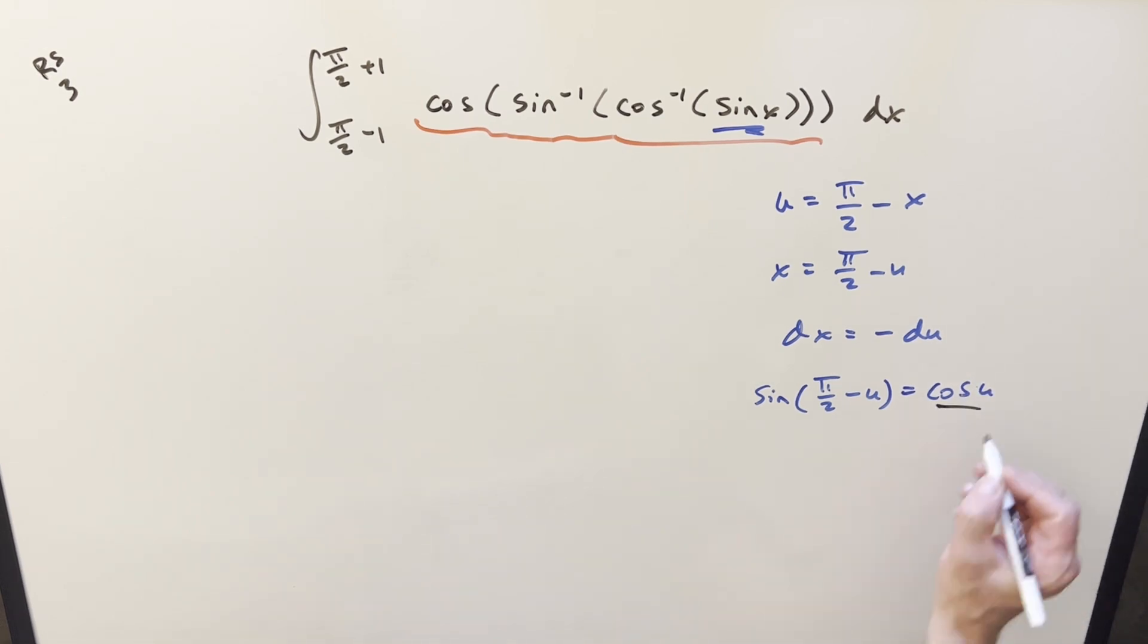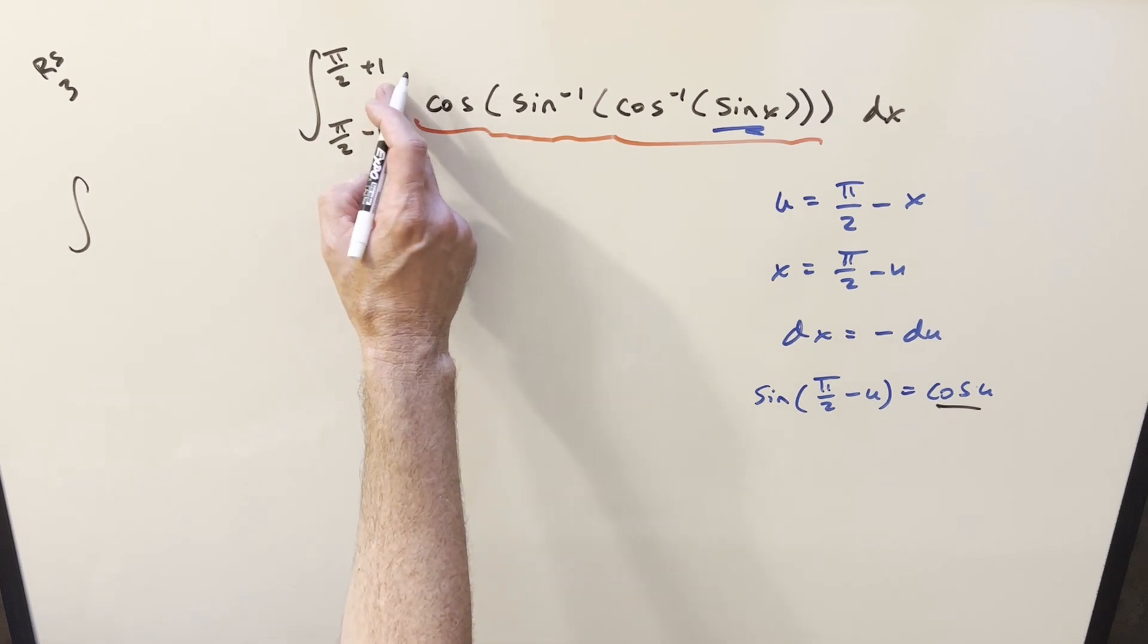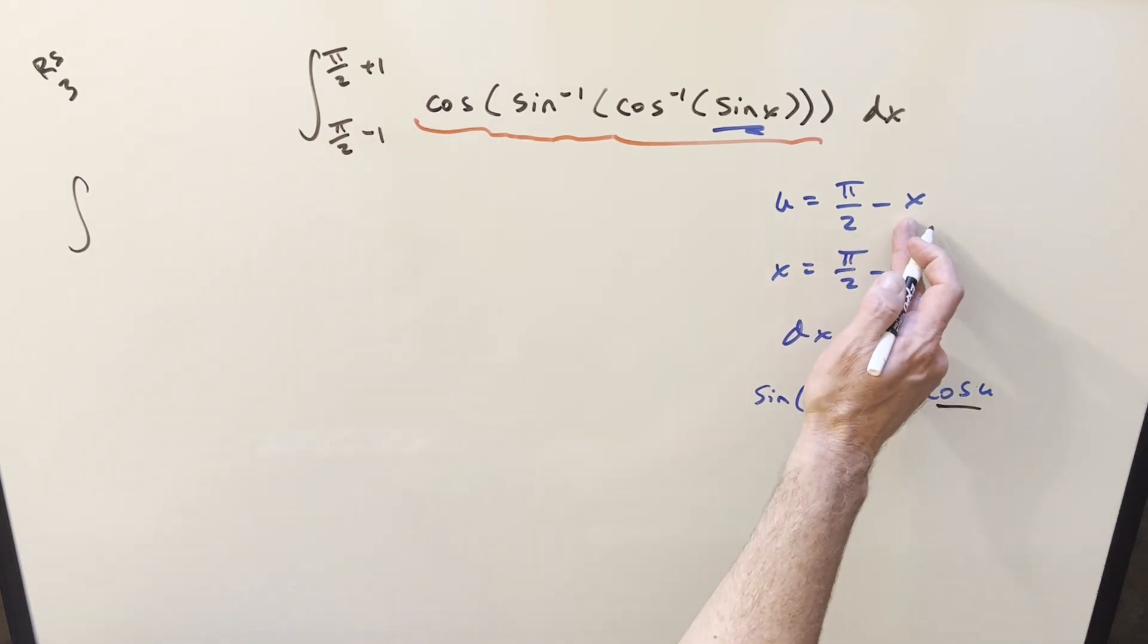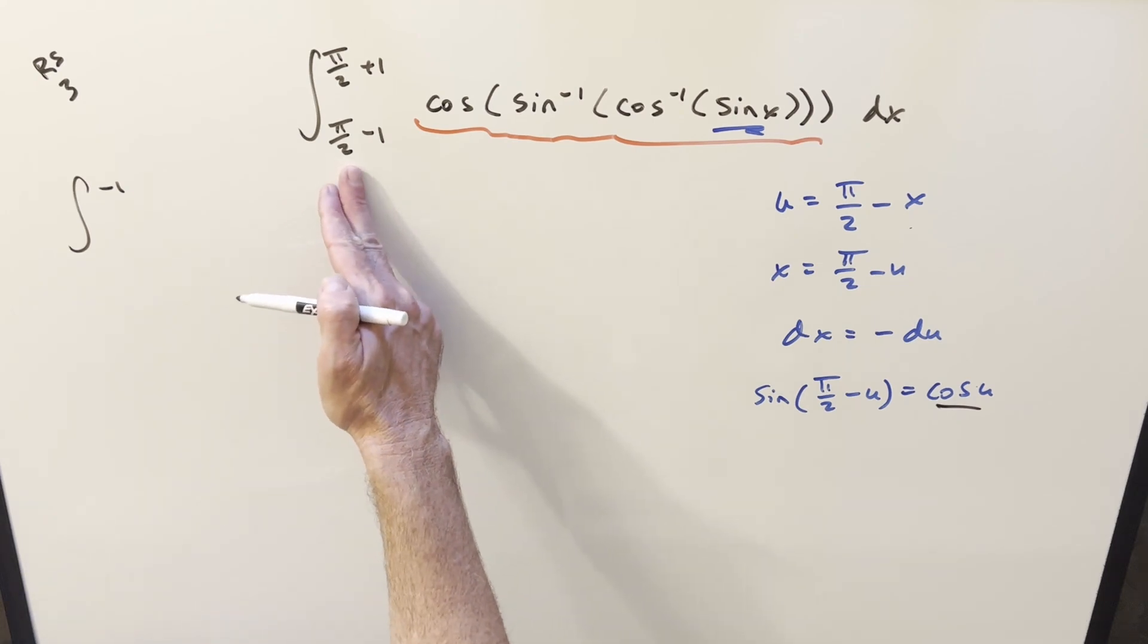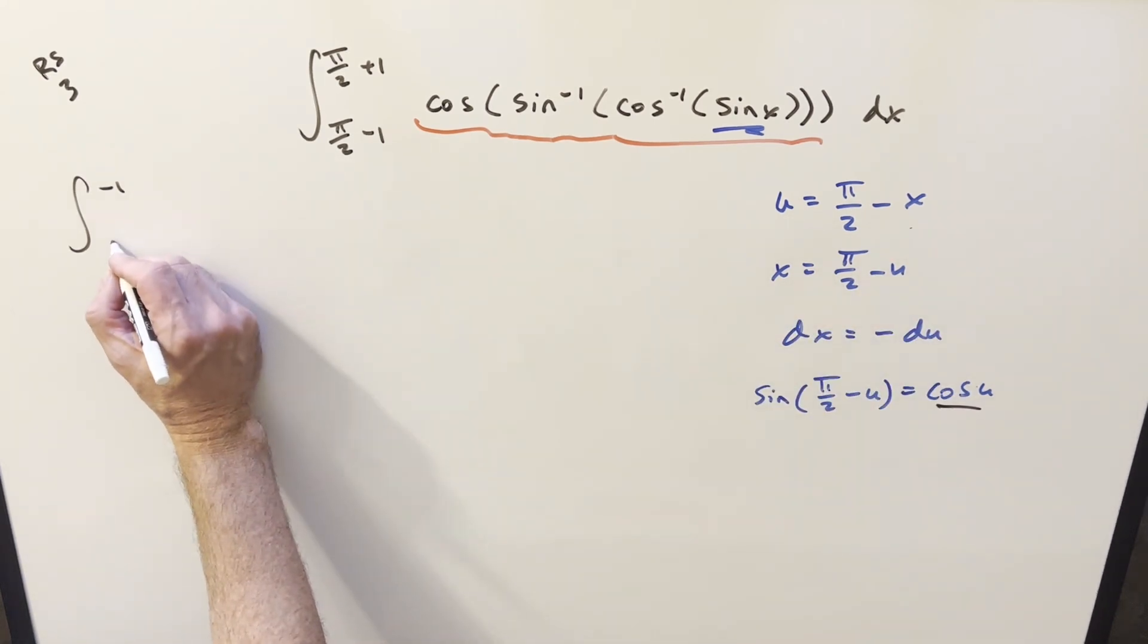So let's go ahead and substitute. First, we need to update our bounds. If we plug π/2 plus 1 in here, the π/2s cancel and we just get minus 1. Plug π/2 minus 1 in here, it's just going to become a positive 1.